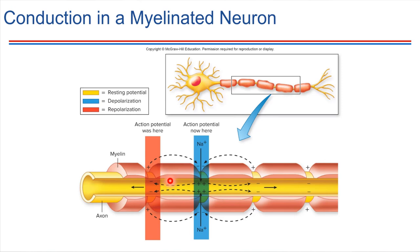So even if voltage-gated ion channels open right here, essentially nothing's going to happen. There's physically not a way for ions to rush across this membrane — the myelin sheath is blocking ion movement. Instead of the depolarization really causing ion movement right here, what happens is the next available place is way over here. This is the next spot where there is some exposed plasma membrane, so this is the next location where an action potential will take place.